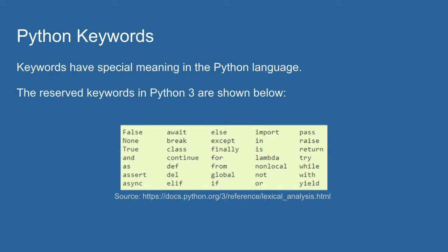Keywords are words that have special meaning in the Python language. Below, I have a list of the keywords in the Python 3 language. There's not many of them, but each of these words means something or does something specific in the Python language.